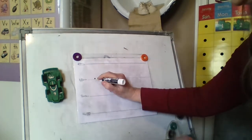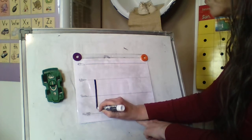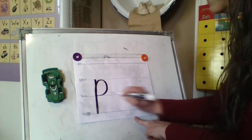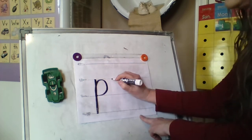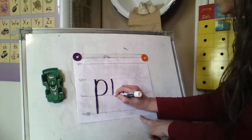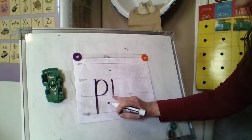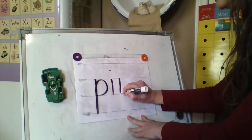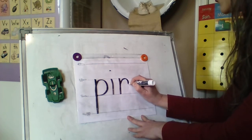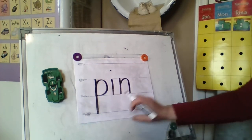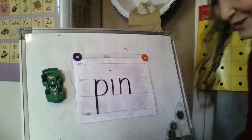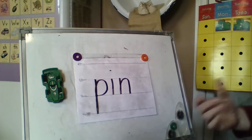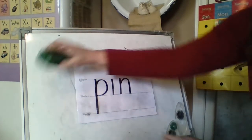P is a plain line letter. It starts on the plain line and you pull down to the worm line. You trace back up to the plain line and go around down on the grass line. P-I-N. N is a plain line letter — starts on the plain line and pulls down to the grass, then you trace back up and make your bump. P-I-N. That is our short letter I. If someone wanted to write pine, they would have a long I.